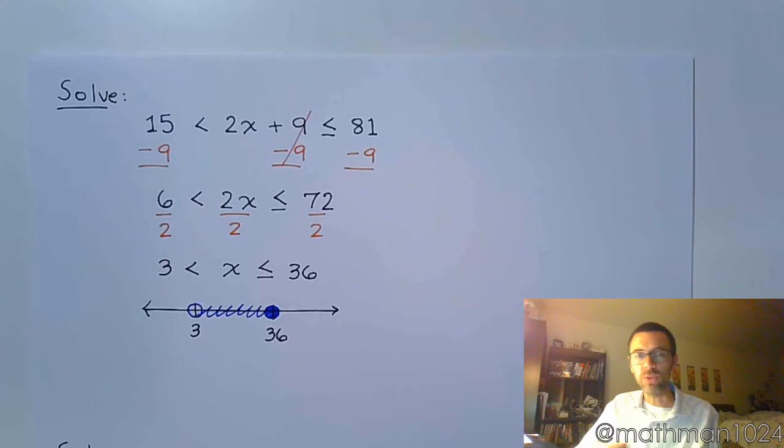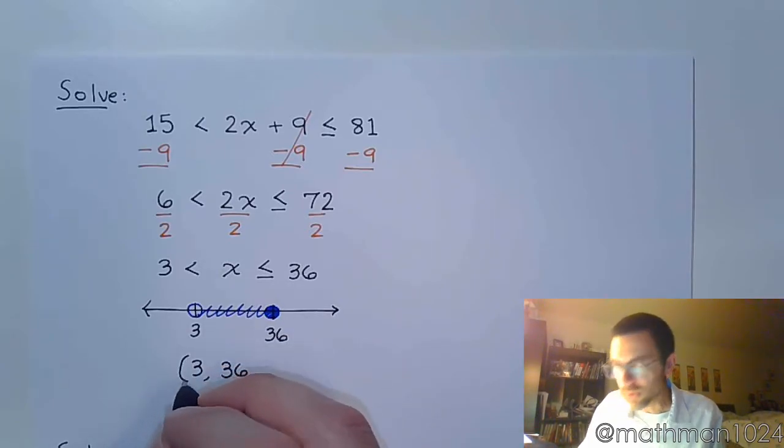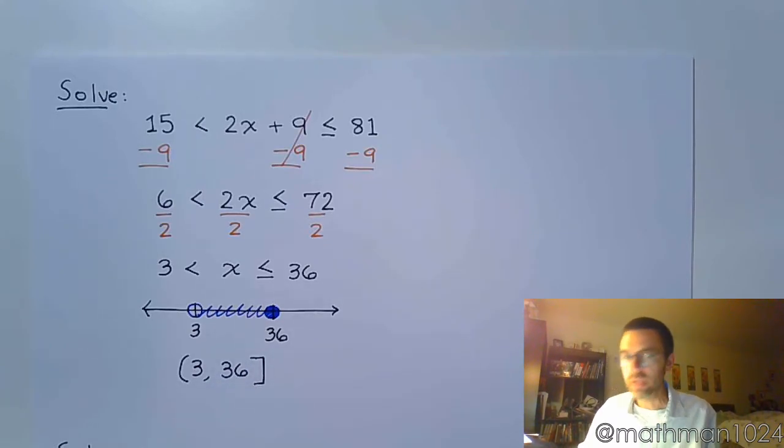And so, we write this using interval notation. This goes from 3 to 36. Parentheses on the 3, because we're not including that. Since the 36 is a closed point, we're going to put bracket on the 36. And that's it.